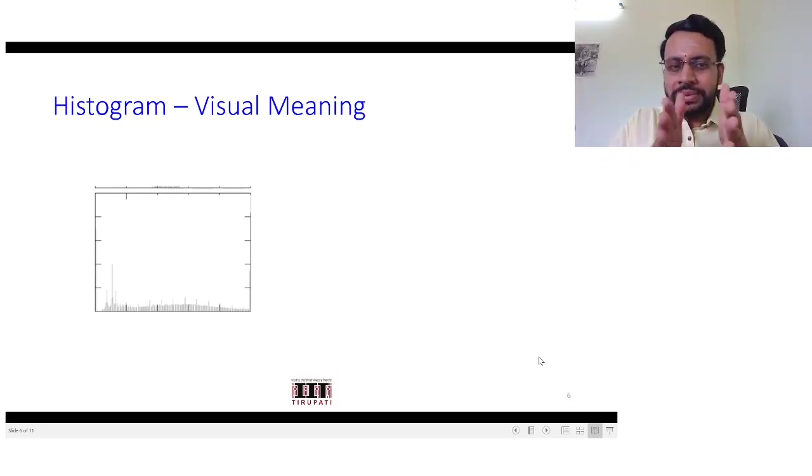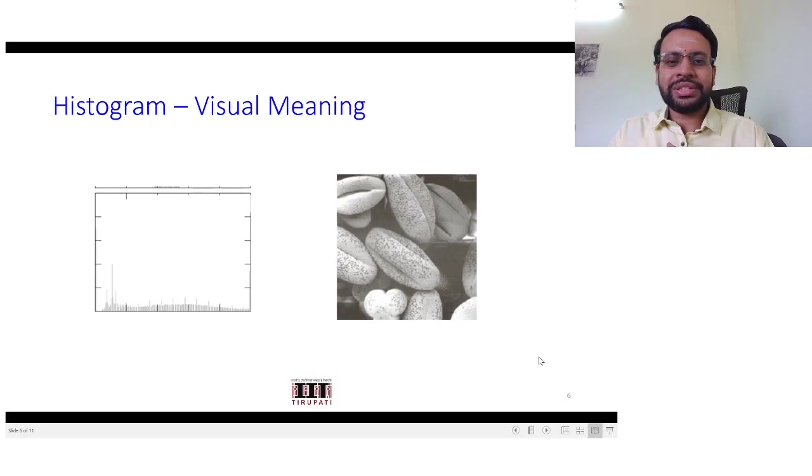Here comes another image where you could clearly see that it is well distributed across the whole range of intensity values. From the histogram it looks like this image should be having a reasonably good contrast. Let us see how it looks like. Again, this is in line with our observation.